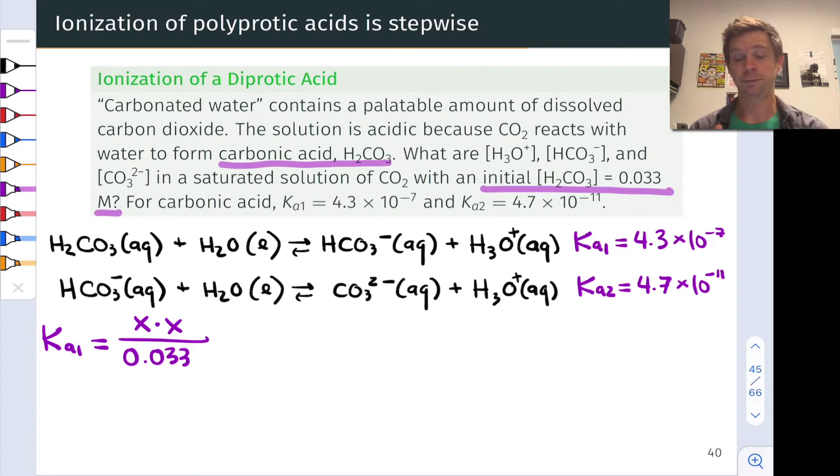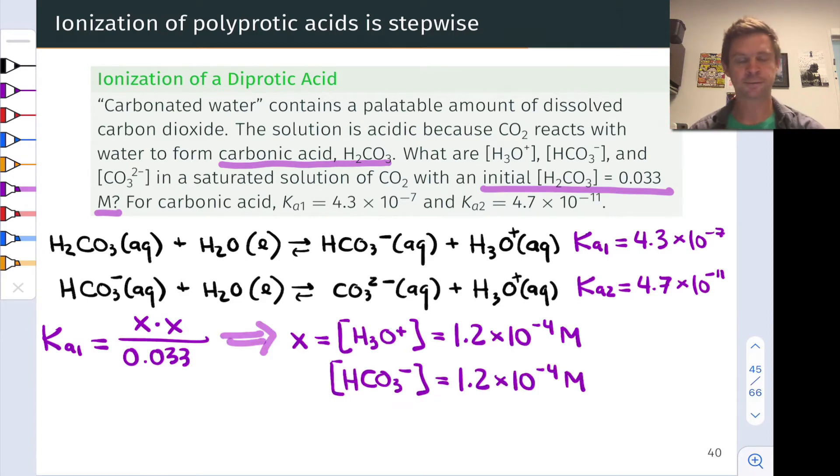Now X becomes our only unknown since we have a value for Ka1. We can solve for X, and this is equal to the equilibrium hydronium concentration. It comes out to 1.2 times 10 to the negative 4 moles per liter. And I encourage you to pause the video and verify this on your own.